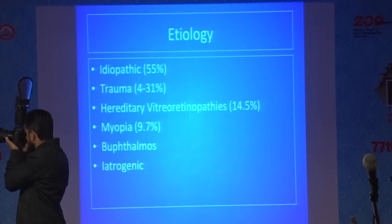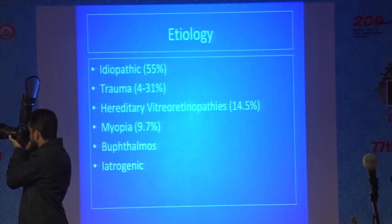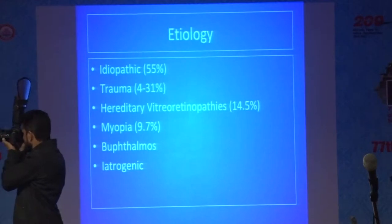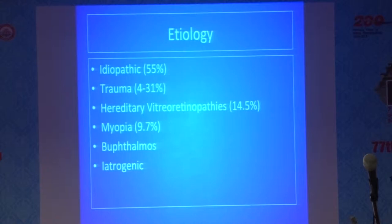Regarding etiology, a large number of giant retinal tears can be simply idiopathic — 55 percent. This is followed by trauma in 4 to 31 percent of cases. Hereditary vitreoretinopathies contribute to 14.5 percent. Then there is myopia, buphthalmos, and also some iatrogenic cases.